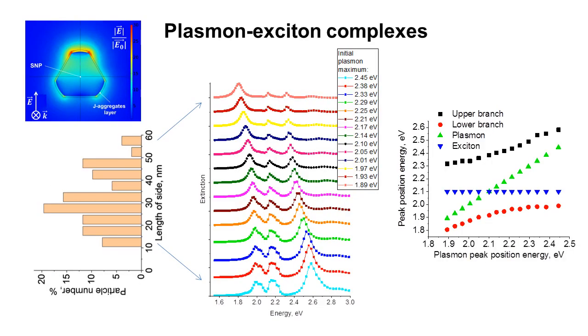However, this is only formally because the plasmon spectral width was a result not of homogeneous broadening but the result of the wide size distribution.